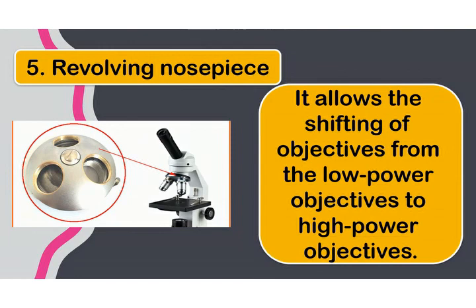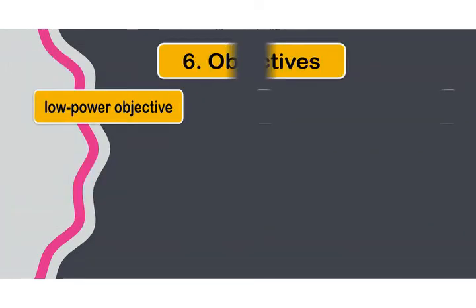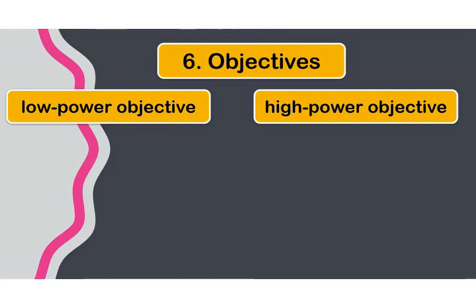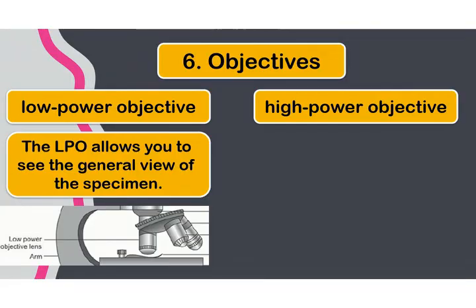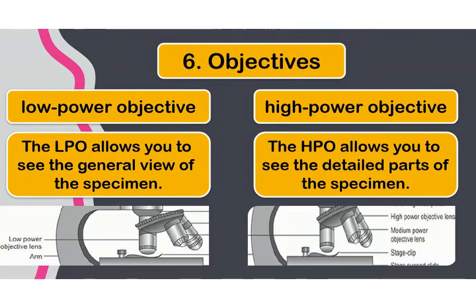Next, the objectives. We have the low power objective, or LPO, and the high power objective, or HPO. We also have the medium power objective. The low power objective allows you to see the general view of the specimen, while the high power objective allows you to see the detailed parts of the specimen.